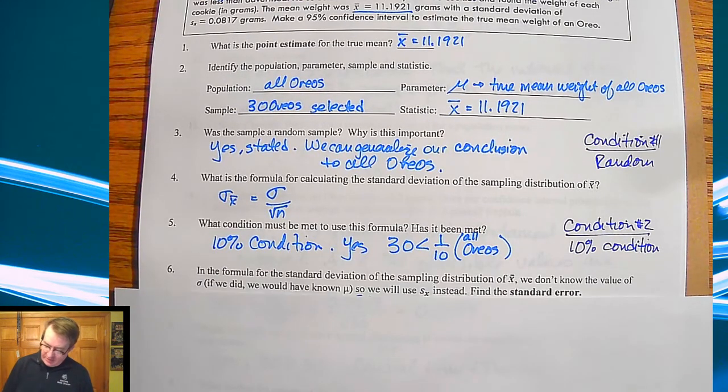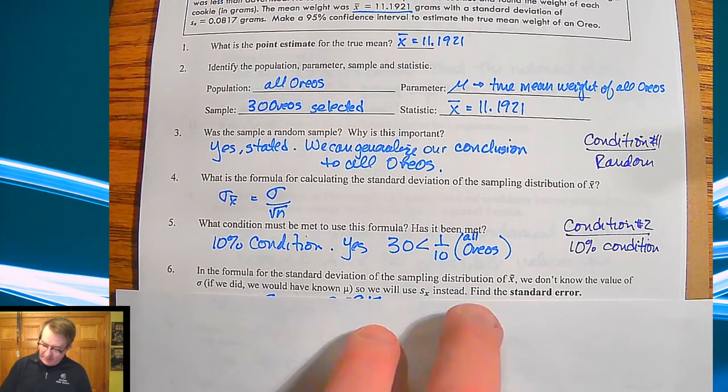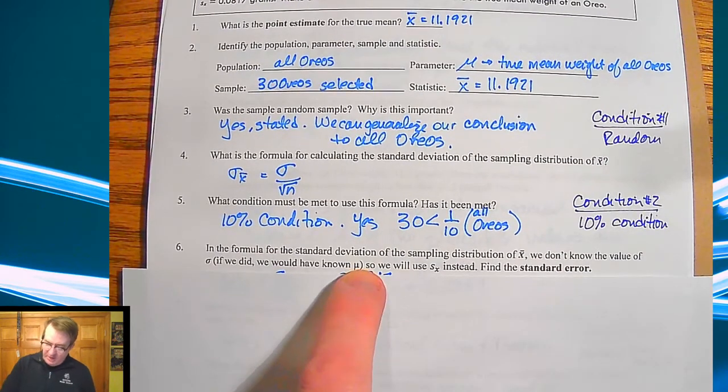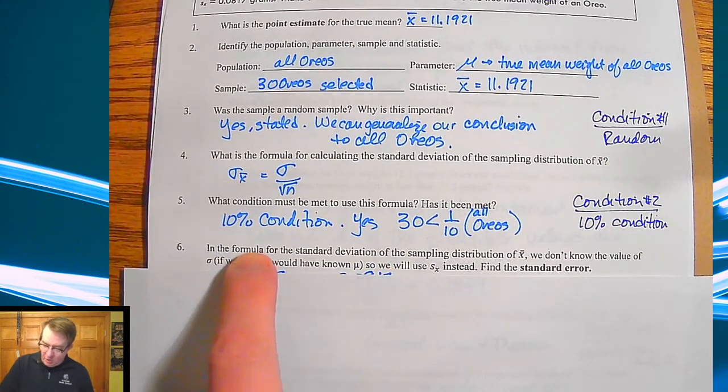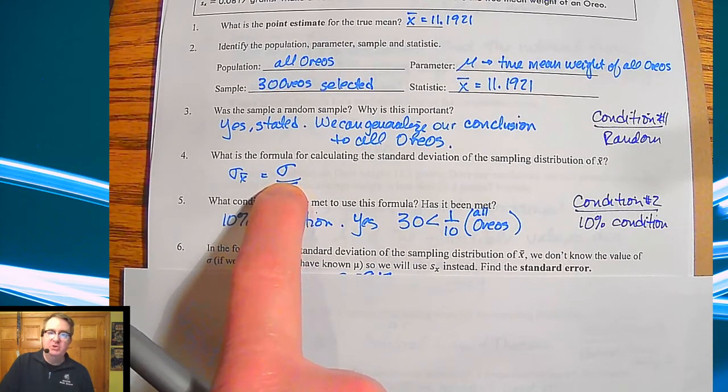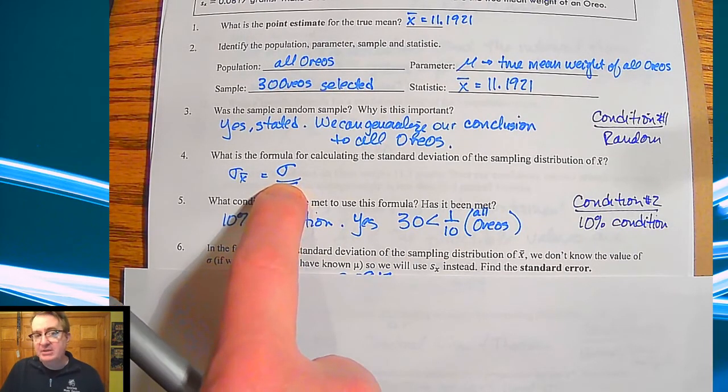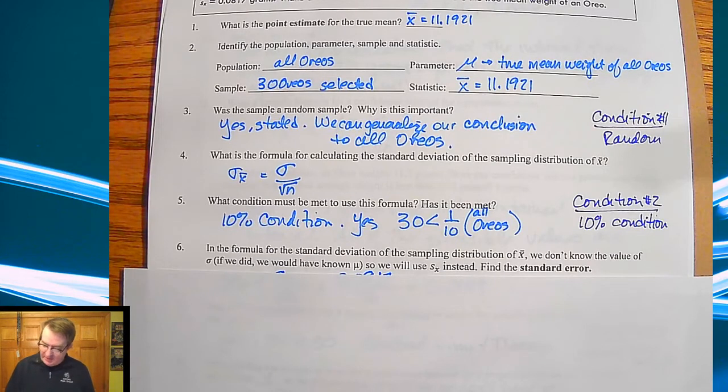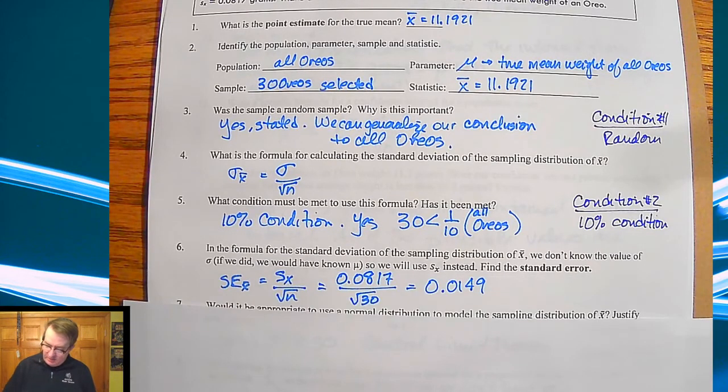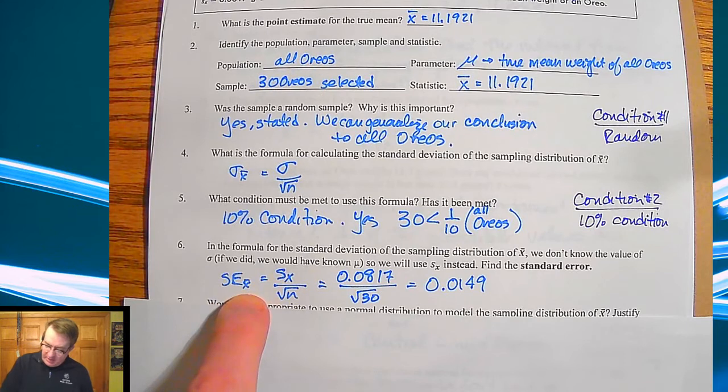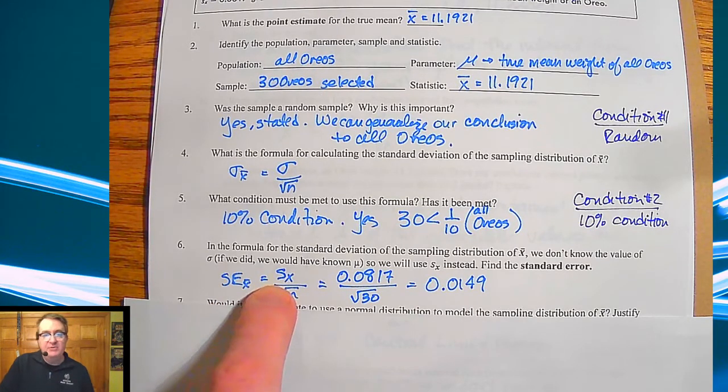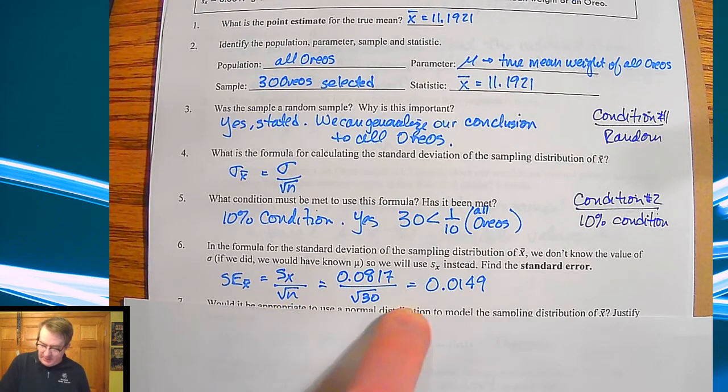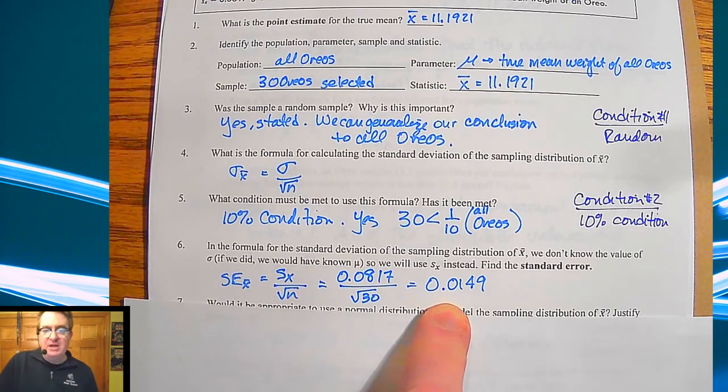And the last one over here is that we're kicking in here for standard error. So in the formula standard deviation we don't know what this is and we generally won't because we're trying to estimate what's going on with the population. So we have to use s of s sub x again instead. So standard area of x bar is going to be the standard deviation that we found divided through by the square root of n. So it gives us a standard deviation for the sampling distribution of 0.0149.